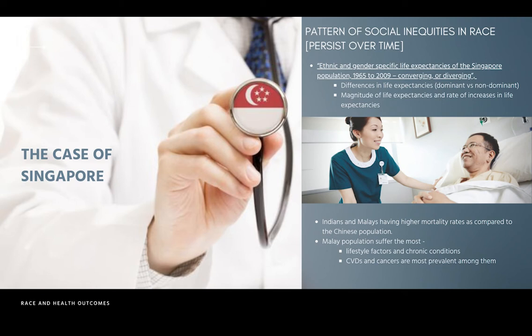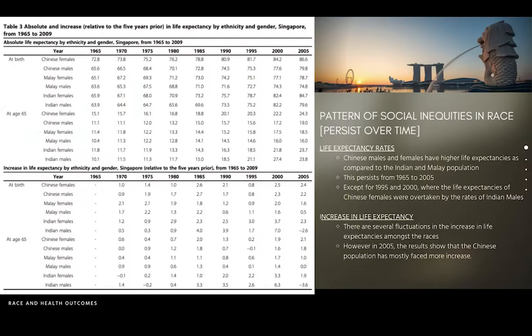Rates of chronic diseases indicated a constant pattern; however, Indians and Malays have a higher mortality rate compared to the Chinese population. The Malay population tends to suffer the most, as cardiovascular diseases and cancer are more prevalent amongst them. As you can see, life expectancy rates vary across different ethnic groups — Chinese males and females have higher life expectancies compared to the Indian and Malay population. Patterns of social inequities persistent over time are shown here, with this inequity persisting from 1965 to 2005.